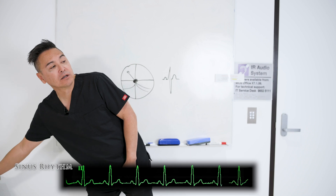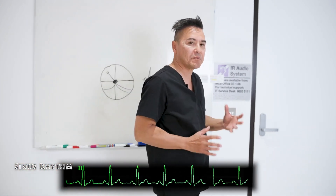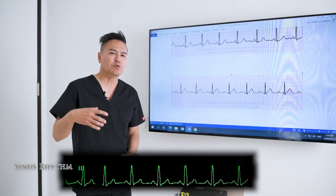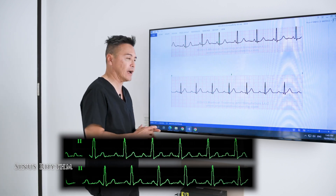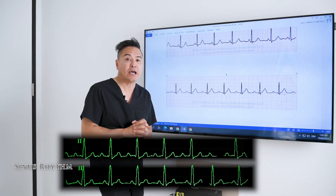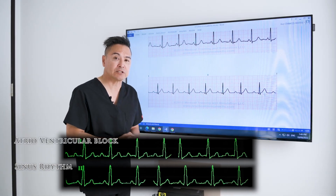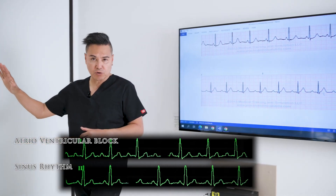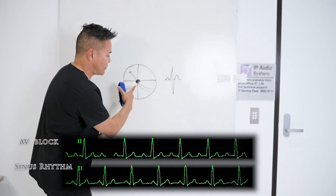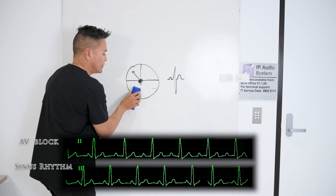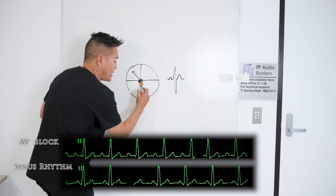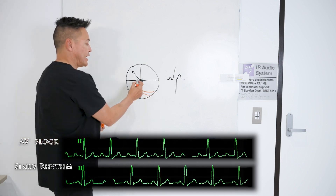I want to show you another rhythm — one that isn't particularly normal. This is actually quite subtle. If you compare the first rhythm to this one, you'll be able to see some P waves, but these P waves are a little bit further away from the QRS complex. This is known as a prolonged PR interval, and a lot of people refer to this as an atrioventricular block. Instead of the QRS complex being initiated straight away from the AV node, there's a delay — and then we get our QRS complex.